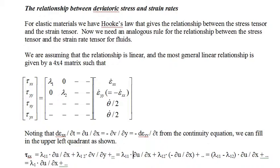Hooke's law describes the relationship between stress and strain for elastic objects. We need to find the analogous relationship between stress and strain rate in a fluid. We are assuming that the relationship is linear, and the most general linear relationship is defined by a 4x4 matrix. Since the fluid is isotropic, the matrix relating stress to strain rate is the same regardless of the orthonormal coordinates used. Note that because of the continuity equation, the y normal strain rate equals the negative of the x normal strain rate, so we can replace the first two entries in the first and second rows with a single number.